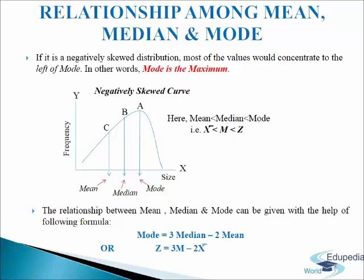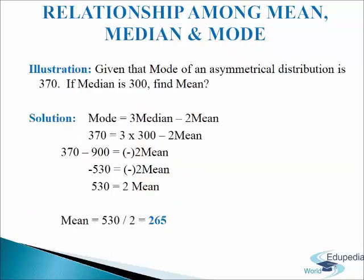Let us understand this with the help of an illustration. The mode of an asymmetrical distribution is 370 and the median is 300; we have to find out the mean. Using the formula — mode = 3 median − 2 mean — we substitute 370 for mode and 300 for median. After calculating, we get mean = 265. With the help of this formula, when any two of the three values (mode, median, or mean) are given, we can find out the third. This shows the relationship among mean, median and mode.